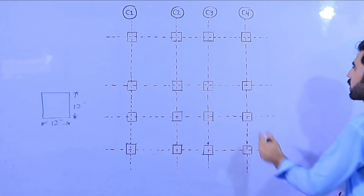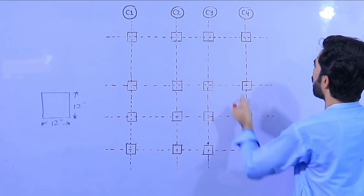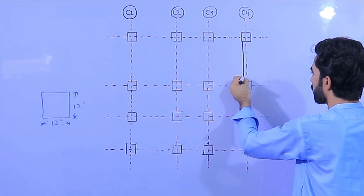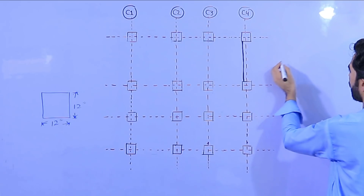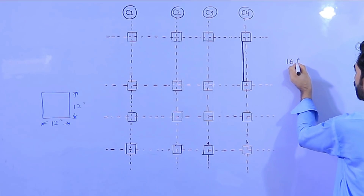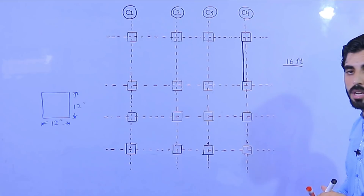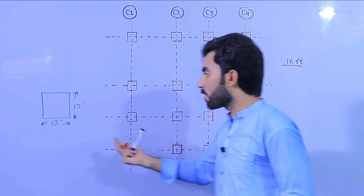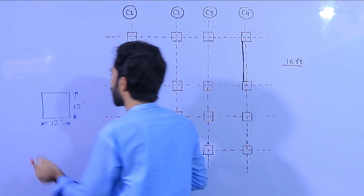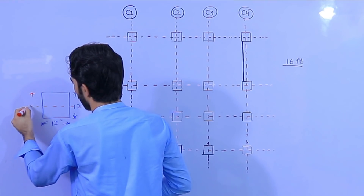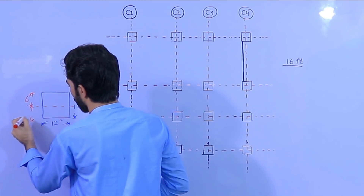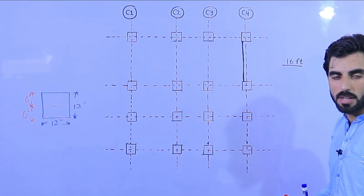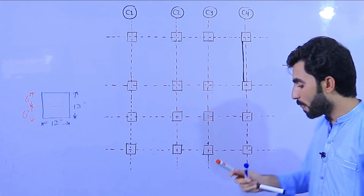For example, the internal distance between two columns — from here to here — is 16 feet. This is just an example. If the internal distance is 16 feet, by the center line method, how can we do the layout? As you know, the size of the column is 12 inches, so half of the column becomes 6 inches on each side, making 12 inches total. The internal length in the house plan is 16 feet.